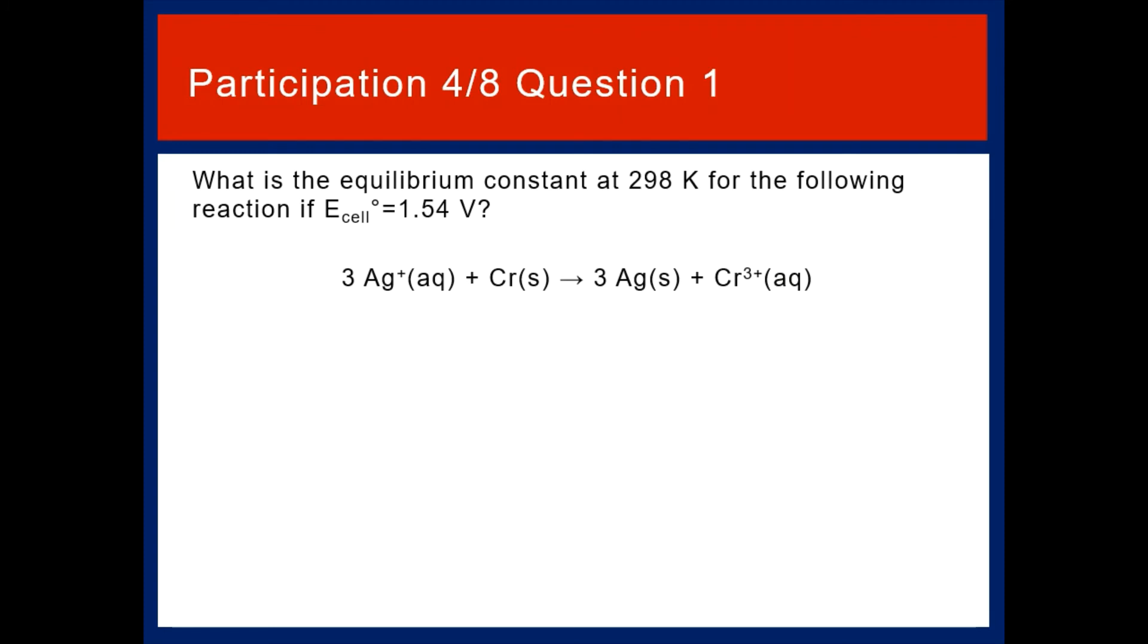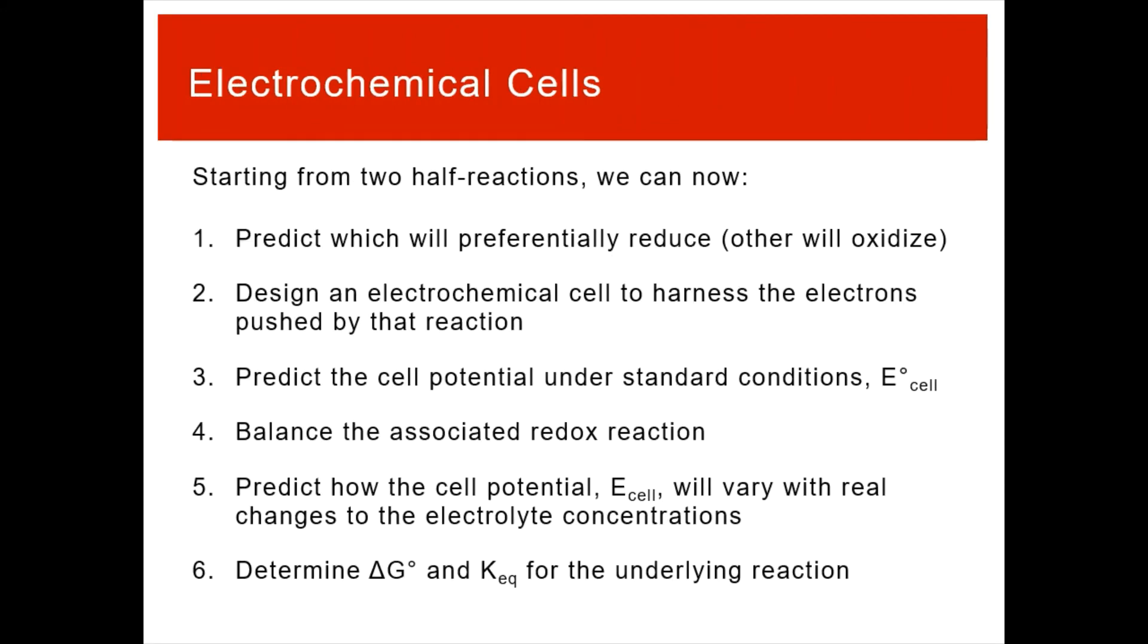Participation 4-8, question 1. What is the equilibrium constant at 298 Kelvin for the following reaction if E_cell° equals 1.54 volts? So reaction 3 silver+ reacts with chromium solid to give you 3 silver solid and chromium 3+ cations. This is the first question on participation 4-8 due Friday, April 8th at 11:55 p.m. over on Blackboard. The link to the assignment is right below the links to these videos.